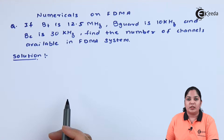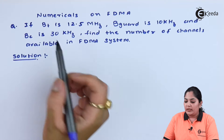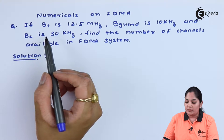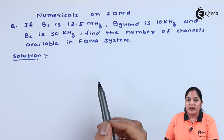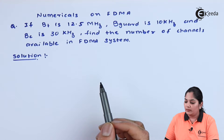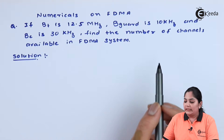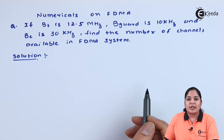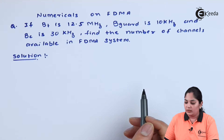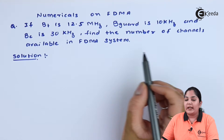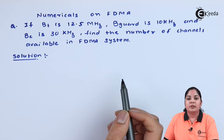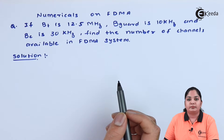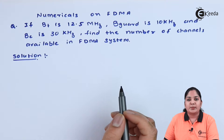The first numerical is on FDMA. The question is: if the total bandwidth is 12.5 MHz, the guard bandwidth is 10 kHz, and the channel bandwidth is 30 kHz, find the number of channels available in the FDMA system.